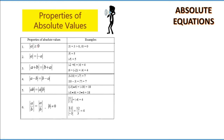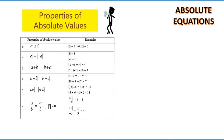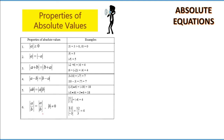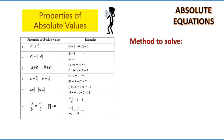Let's look at the properties of absolute values first. Absolute values are always positive, so we define them as greater than or equal to zero. The modulus of 3 is always 3, and modulus of 0 is always 0. Also, modulus of a equals modulus of negative a. Modulus of a plus b equals modulus of b plus a. Modulus of a minus b equals modulus of b minus a. The modulus of the product a times b equals modulus of a times modulus of b, and similarly for fractions, provided the denominator is not zero.